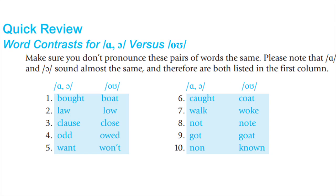Quick review: sound contrasts for AH and AW versus O. Make sure that you don't pronounce these pairs of words the same: bot, boat; law, low; claws, clothes.